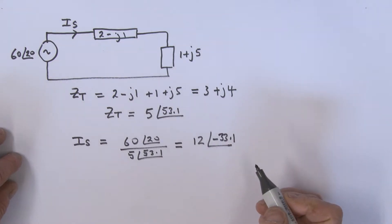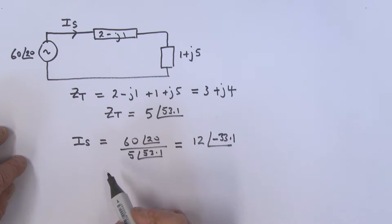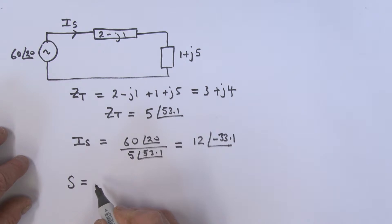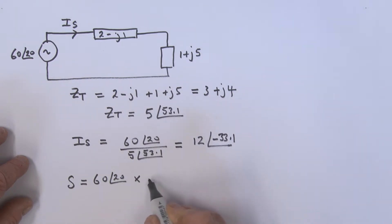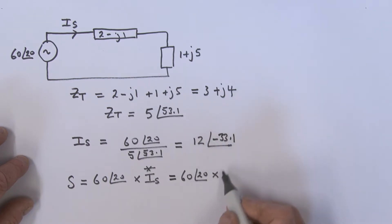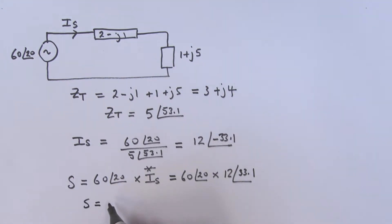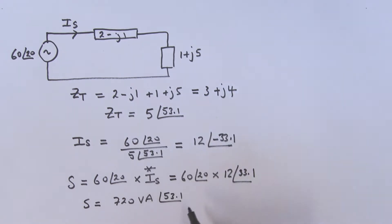I'm pretty close to finding the apparent power. I know the voltage and the current, so the apparent power S = V × I_s*, the complex conjugate of I_s. That is 60∠20° × 12∠+33.1°, which equals 720 volt-amps at an angle of 53.1°.